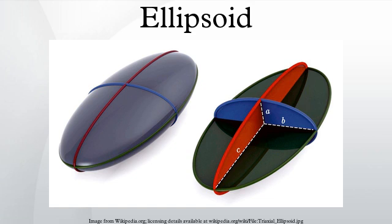Equations in specific coordinate systems: Cartesian, Spherical, Cylindrical. See also: paraboloid, Poinsot's ellipsoid, hyperboloid, reference ellipsoid, geoid, ellipsoid method, superellipsoid, Haumea (a scalene ellipsoid-shaped dwarf planet), homeoid (a shell bounded by two concentric similar ellipsoids), focaloid (a shell bounded by two concentric confocal ellipsoids), elliptical distribution in statistics, and ellipse.